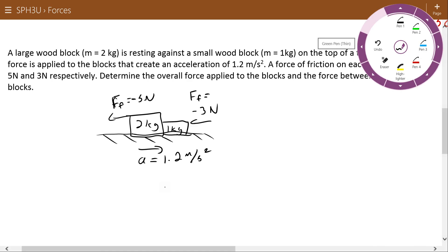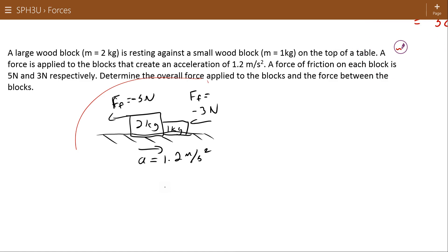So, determine the overall force applied to the blocks, and the force between the blocks. Step one, let's consider the overall problem. If I want to know the overall force applied to the block, what I'm going to do is treat this entire system like it's one 3 kilogram object. Force of gravity, force of normal. And I have some applied force to this system. That applied force is causing acceleration of 1.2 meters per second squared. And there's a force of friction pushing back.